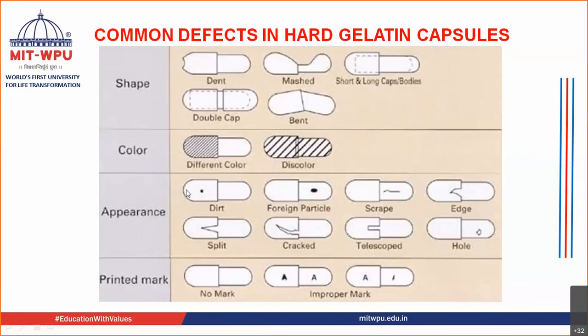Today we are going to study about the problems, defects, and remedies in hard gelatin capsule manufacturing. When you are doing capsule manufacturing, there are some problems and remedies for those problems, and there are some reasons for those problems. These we are going to study now.